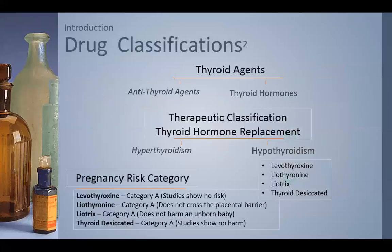For drug classifications, these medications are thyroid agents, broken down into antithyroid agents — used for treating hyperthyroidism when we have too much T3 and T4 — and thyroid hormones, which are the drugs we'll be discussing for hypothyroidism. These fall under the therapeutic class of thyroid hormone replacements. The four drugs are levothyroxine, lyothyronine, lyotrix, and thyroid desiccated. These are very safe drugs, in category A; they don't cross the placental barrier and are harmless to unborn babies.